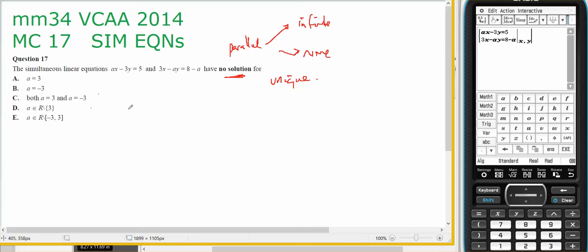There's a couple of ways that I can test for parallel. One, I can use a class pad, use simultaneous equations, but be a bit careful. Sometimes not all the answers come up. Two, I can look at the determinant of the matrix. And three, I can look at y equals mx plus c and compare my m's.